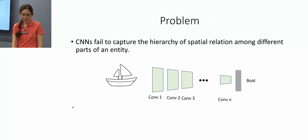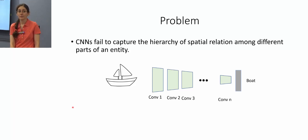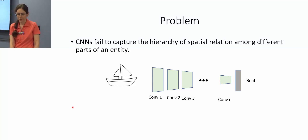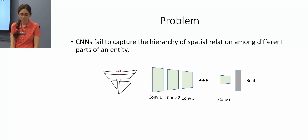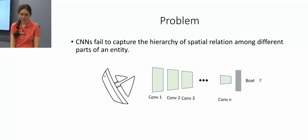But despite their success, CNNs suffer from a major drawback. They fail to capture the hierarchy of spatial relations among different parts of an entity. For instance, in a well-trained image classifier, these two samples would be classified confidently as a boat, but the classifier is not confident about the rotated version of the same object.